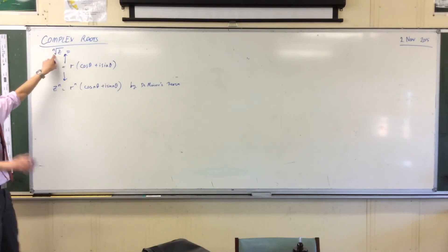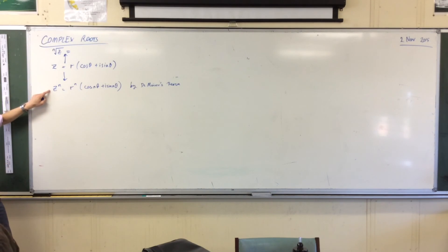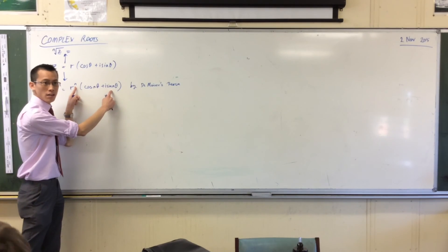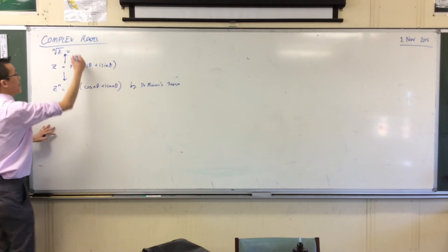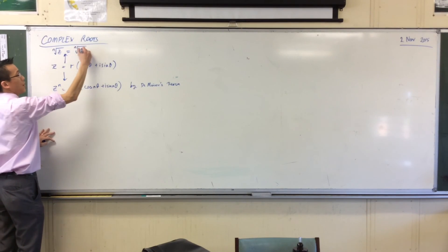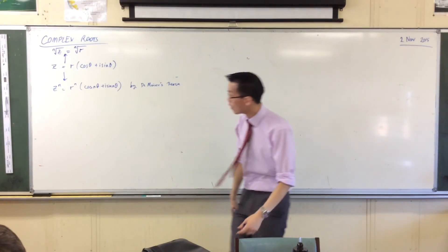That's just the index form. So here, because in index form this is z to the power of 1 over n, everywhere I have n in here I can replace it with 1 over n up here. So I'm going to write that out just at the front, because r to the power of 1 over n is just the nth root of r.